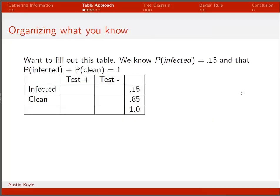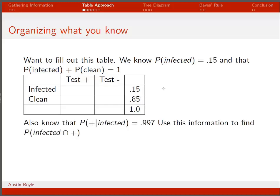Let's organize this information and fill out the table. The probability of being infected is 0.15, and since the probability of being infected plus the probability of being clean equals 1, that means 85% of people must be clean. We're also told that the probability of a positive test given infection is 0.997, and we want to find the intersection of infected and a positive test in the table.